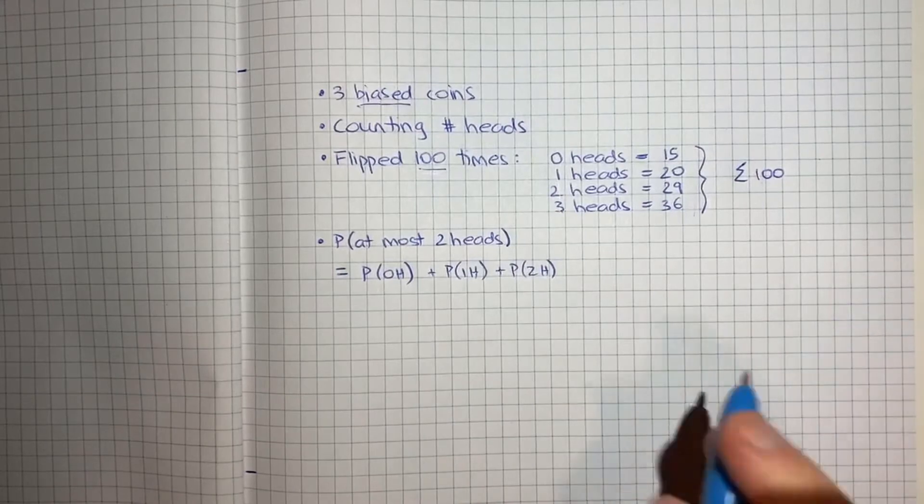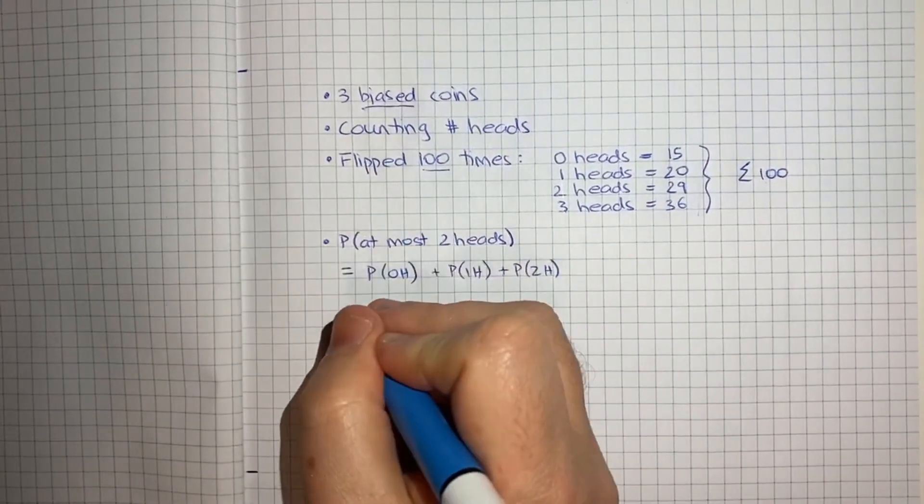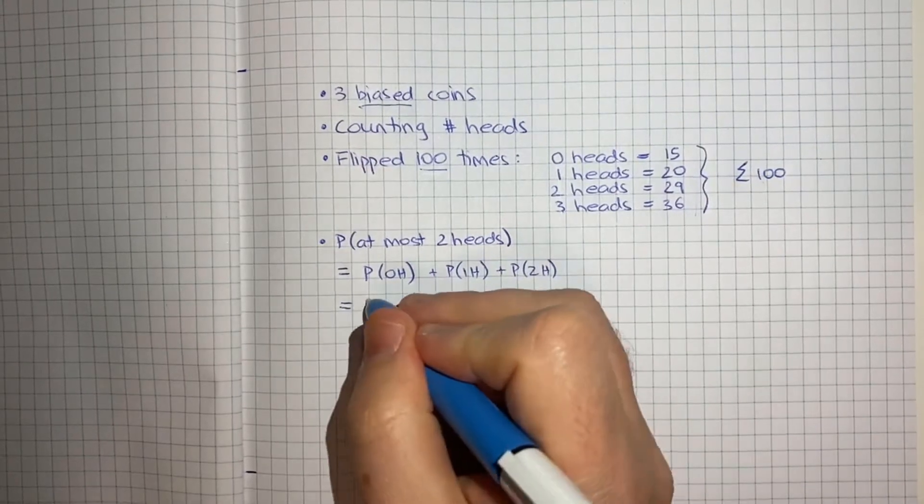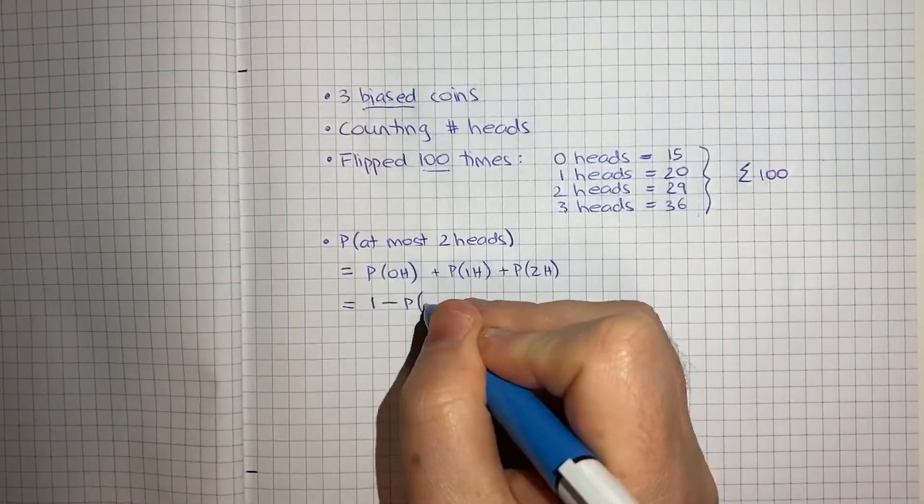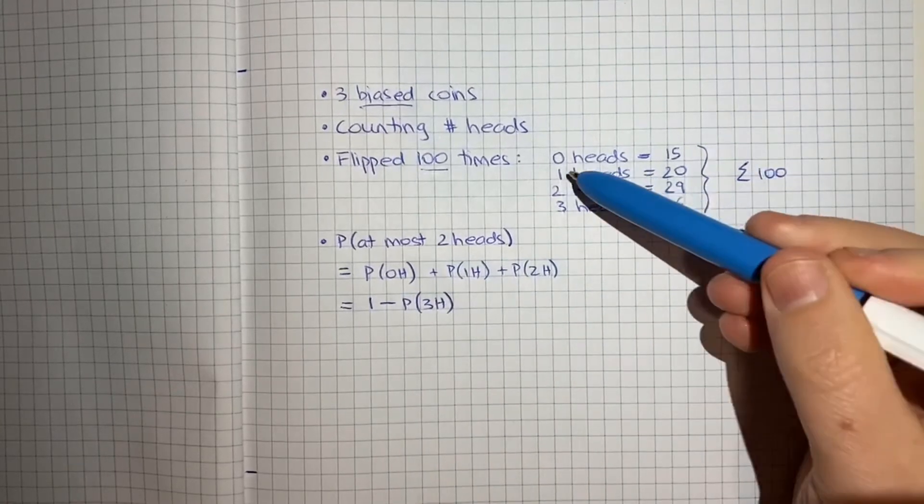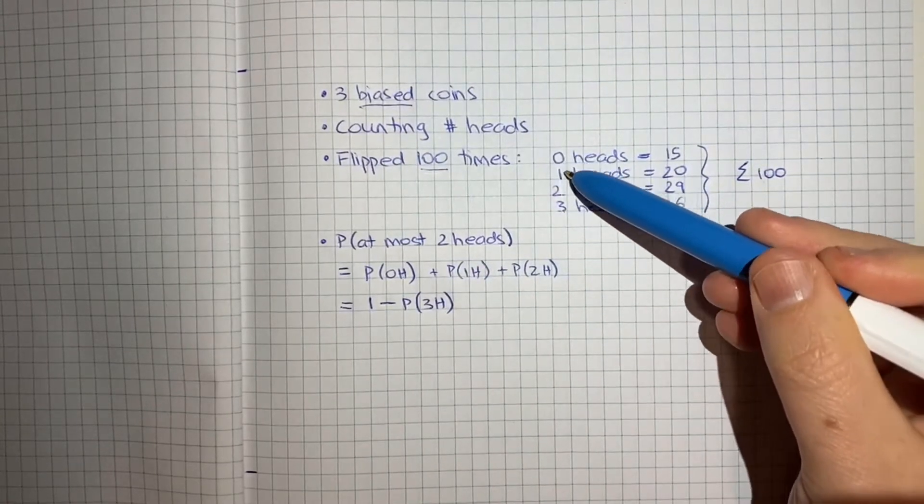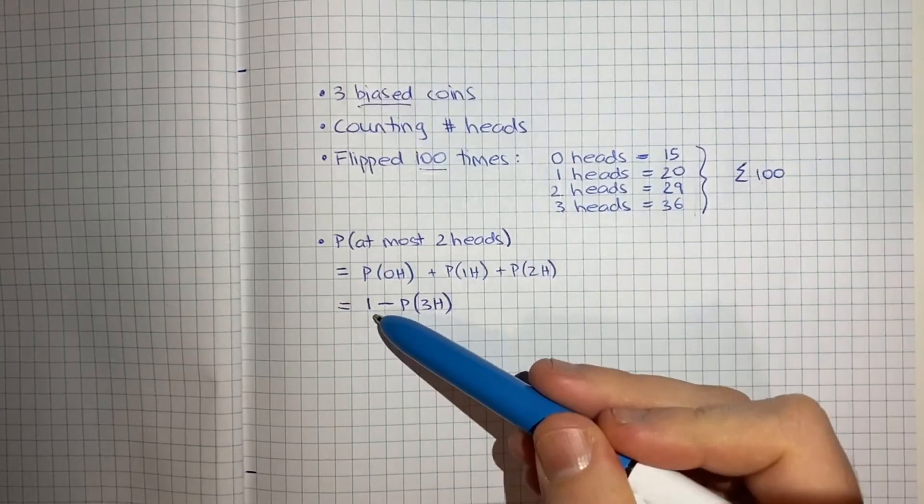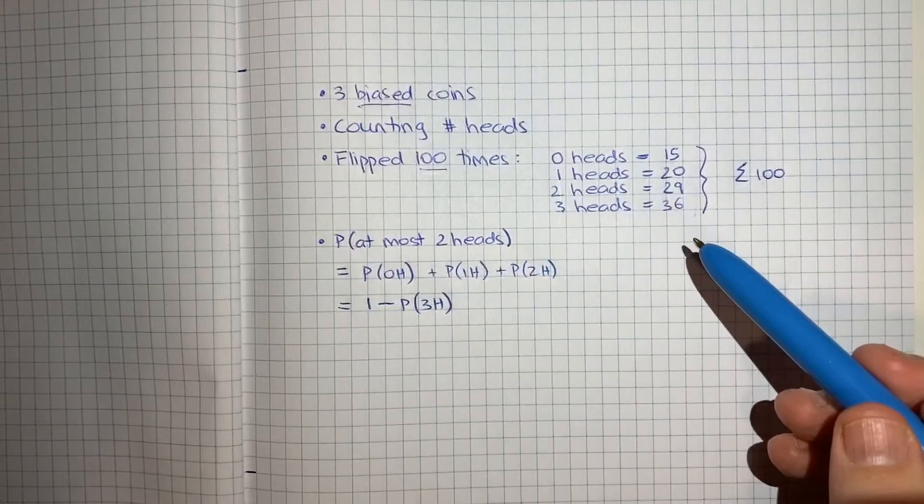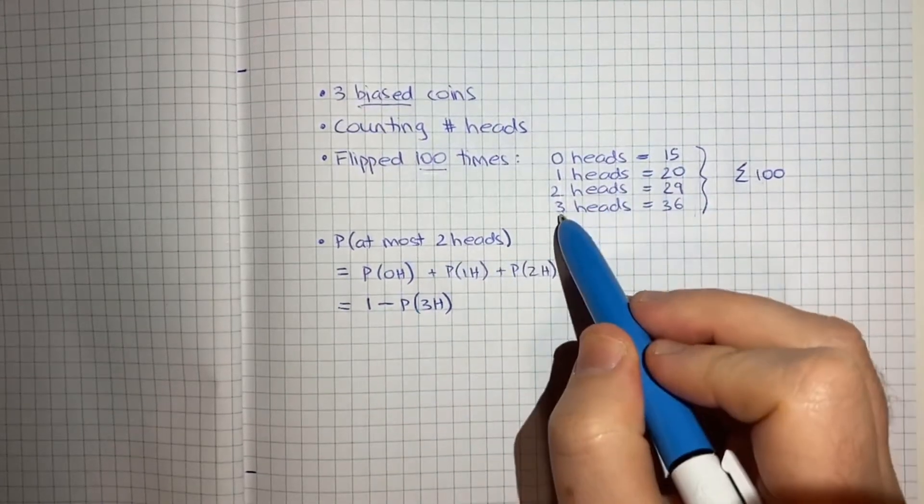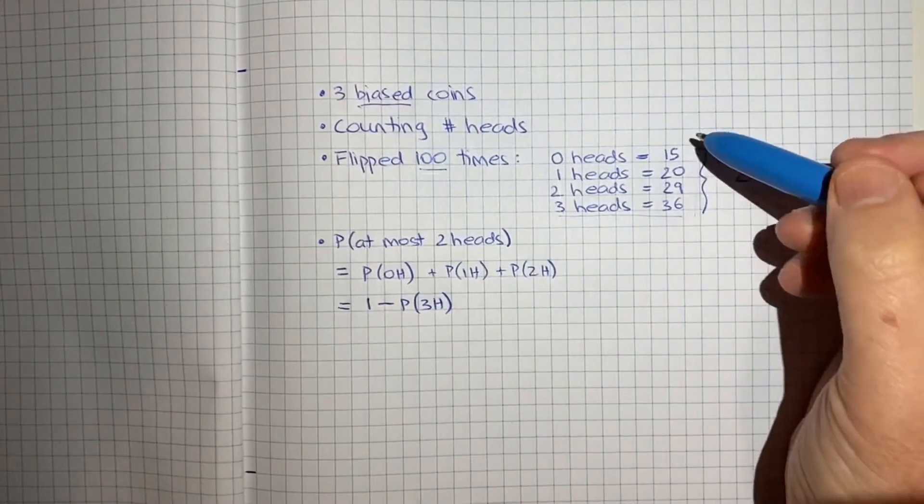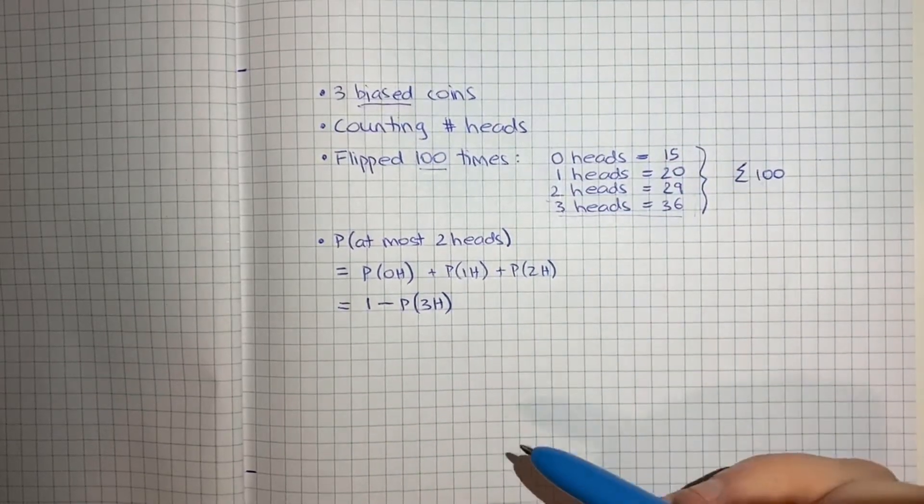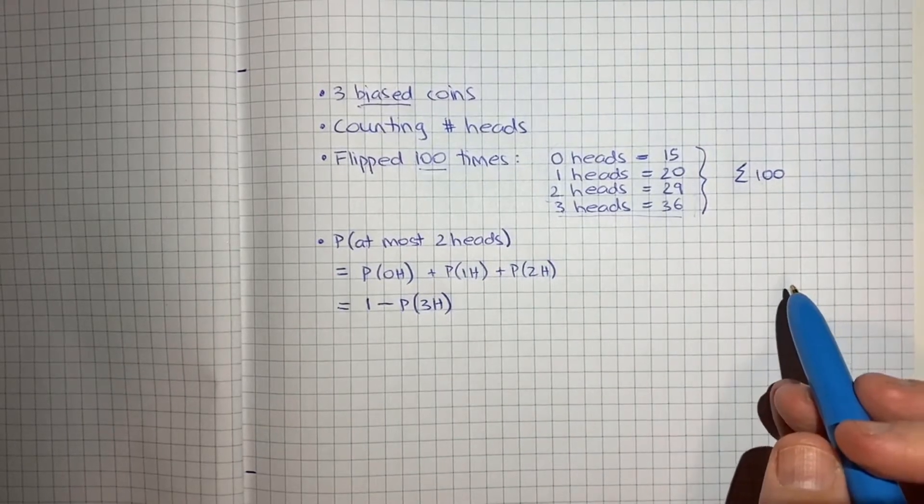An alternative and slightly faster way is to say that the probability of getting at most two heads is one minus the probability of getting three heads. Because remember, there's only these four possible outcomes. All of those probabilities must add up to one or a hundred percent. So taking one minus the probability of three heads will, by definition, give you the sum of the other three. And what I'll do is I'll work through both of these approaches to show you that you do get the same answer.